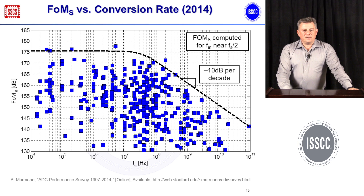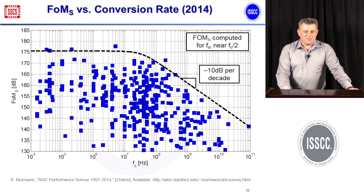Now let's return to the question of speed dependency. Once you've selected the right figure of merit based on resolution, you can plot the figure of merit as a function of speed. This is shown here for the SNDR-based Schreier figure of merit, with frequency on the x-axis. At low frequency it is relatively easy to achieve a good figure of merit, but as you push frequency you pass a corner where efficiency deteriorates. The slope of the fit line is about 10 dB per decade, corresponding to power going quadratic with speed.